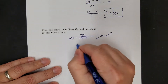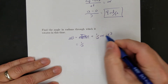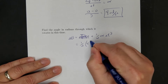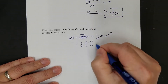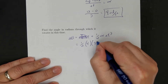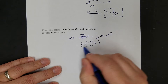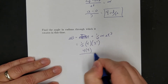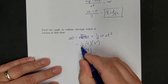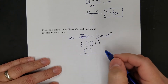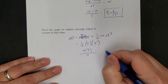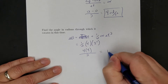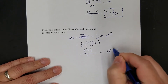Let's plug in and solve. That's one-half times the angular acceleration I just got, which was 4, times my time of 3 squared. So that's 4 times 9, which is 36, divided by 2 equals 18 radians. So the angular displacement is 18 radians.